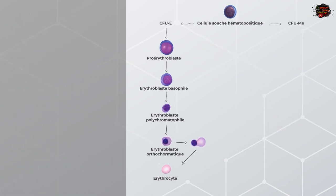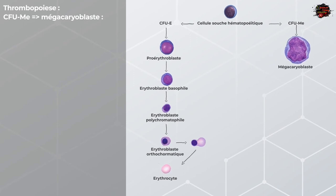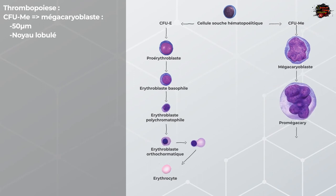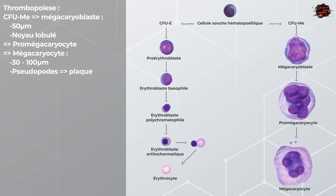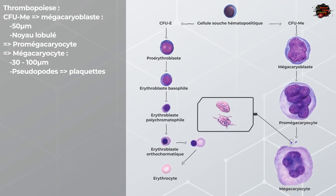Les CFU-ME, Colony Forming Units Mégakaryocytes, sont des cellules souches unipotentes avec l'unique potentiel d'engendrer des mégakaryoblastes. La taille de ces cellules est d'environ 50 microns. Ils ont un noyau lobulé. Elles ne vont pas se diviser, mais vont plutôt se transformer en mégakaryocytes en passant par un stade intermédiaire. Les mégakaryocytes auront une taille finale allant de 30 à 100 microns et les cellules auront plusieurs pseudopodes. Ce sont les longs et fins pseudopodes émanant de la membrane plasmique qui vont se fragmenter sous l'effet de la thrombopoïétine, donnant ainsi les plaquettes du sang.